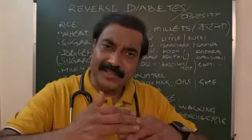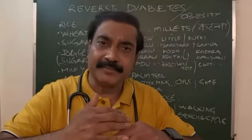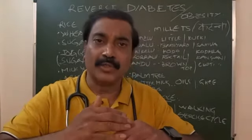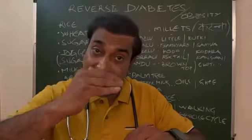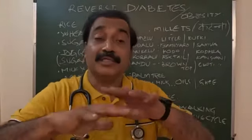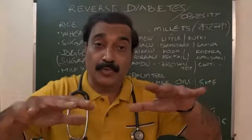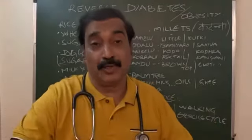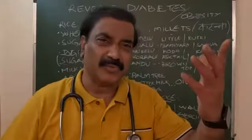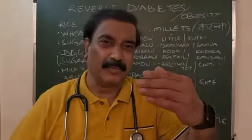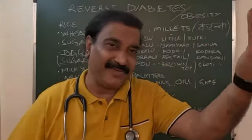Along with it, hypothyroidism — thyroid also comes — and your BP also. Everything will come down. These are all put together known as metabolic syndrome. I talked about this previously.